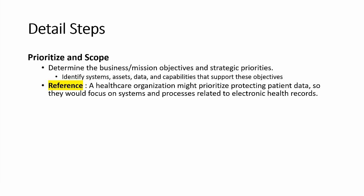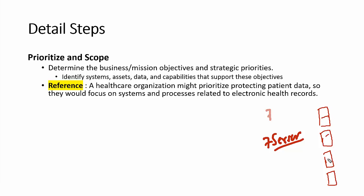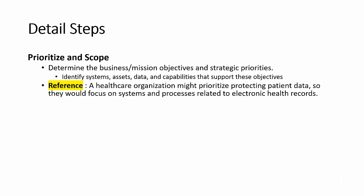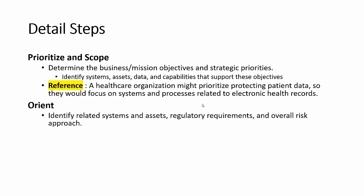The healthcare organization has seven servers, four of which store patient health records. The priority is to protect those four systems first. By talking to stakeholders and understanding their core business requirement — protecting patient healthcare data — I identified the scope. The second step is to identify systems and assets that need to comply with regulatory requirements and the overall risk approach. This organization is based in the US and needs to comply with HIPAA.